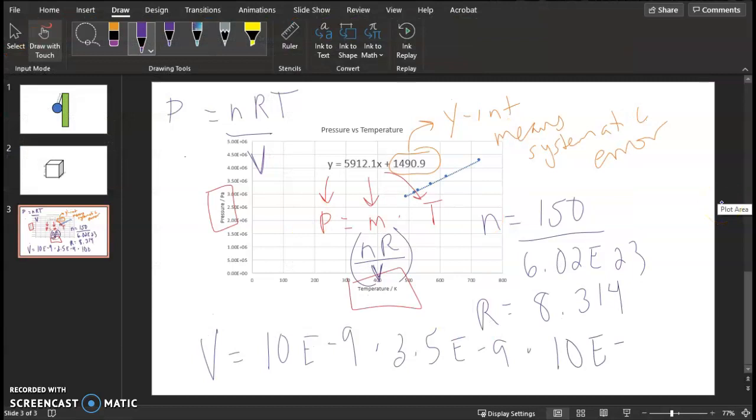So when I do n times R, 150 times 8.314 divided by 6.02e23, I get a very small number, 2.07e-21. And then I divide by the volume. I divide by 10e-9 times 3.5e-9 times 10e-9.